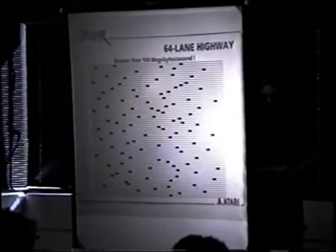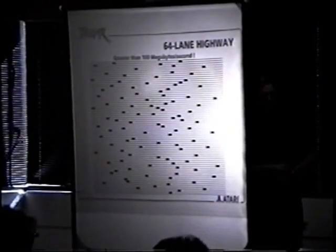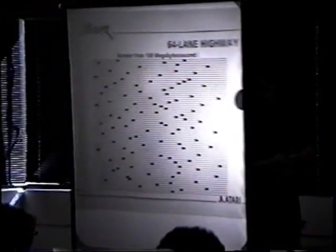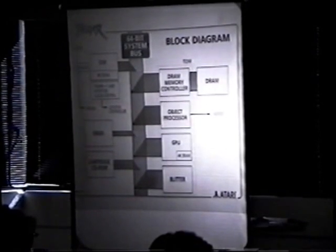We see our system with a true 64-bit system, which gets greater than 100 megabytes per second of bus bandwidth. We see that all of the processors are sitting on a 64-bit bus, and three of them — the Object Processor, the Graphics Processing Unit, and the Blitter — have direct 64-bit access to this bus. You can access all of the memory in the system directly through the 64-bit bus, and you can do these transfers at a speed in excess of 100 megabytes per second.